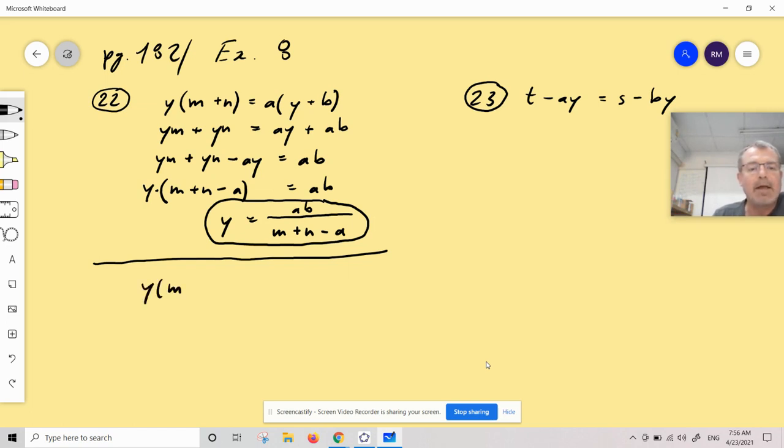That looks like Y times M plus N. And I only expand the right side. The right side I need to expand because I need to get the expression where the Y is in it. AY plus AB. Now I copy the left side. I bring the AY with minus AY over here. There was not plus. Why would I write here plus? AB. Okay.